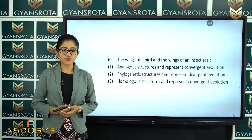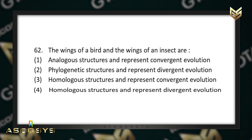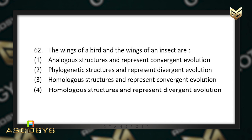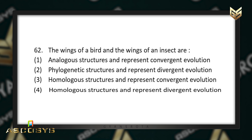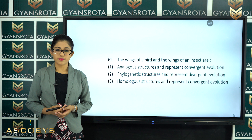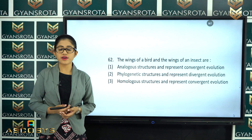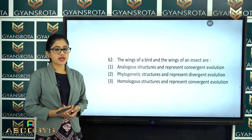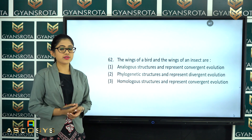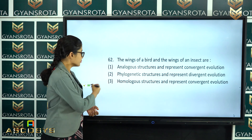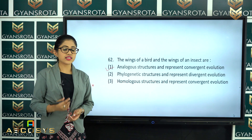The next question is question number 62. The wings of a bird and the wings of an insect are: analogous structures representing convergent evolution; phylogenetic structures representing divergent evolution; homologous structures representing convergent evolution; or homologous structures representing divergent evolution? From the chapter Evolution, the wings of a bird and wings of an insect are analogous structures representing convergent evolution. Option number 1 is the correct answer.